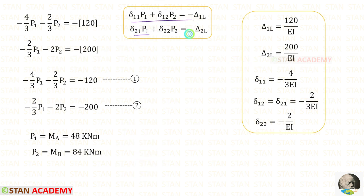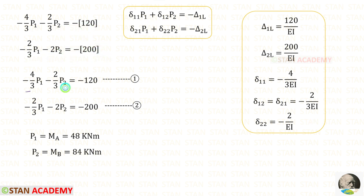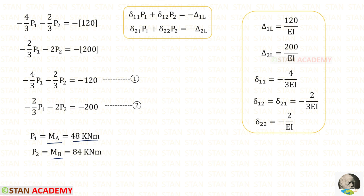In the two equations, we have now found everything. Applying the values and using a calculator to solve the two simultaneous equations, we get MA equals 48 kNm and MB equals 84 kNm. Both values are positive, which means our assumption is correct — they are hogging moments.